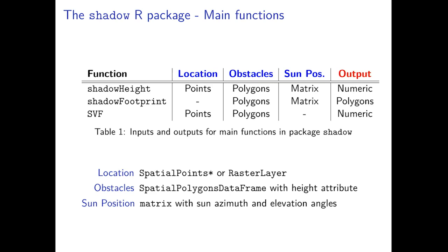As we will see shortly, the inputs and outputs slightly vary based on type of calculation. However, in general, the inputs comprise the queried location which is spatial points or a raster layer, the obstacles which is a polygonal layer with a height attribute, and sun position given as a matrix with sun azimuth and elevation angles.